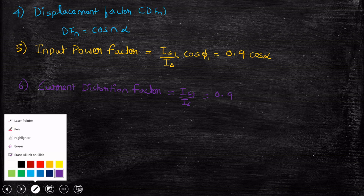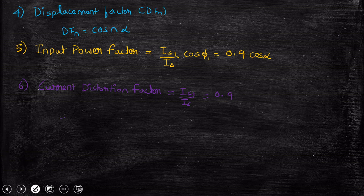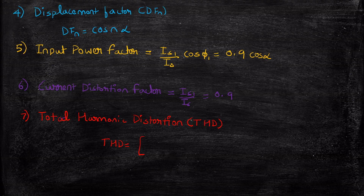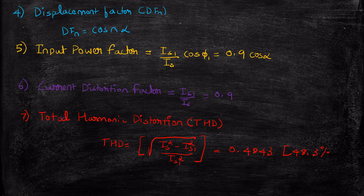The next important factor is the total harmonic distortion (THD). THD equals the square root of (IS² minus IS1²) divided by IS1². When we substitute and simplify this expression, we get THD equal to 48.43%. So if someone asks you the total harmonic distortion of a fully controlled rectifier, the answer is 48.43%.